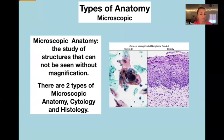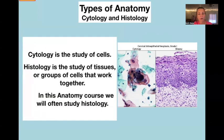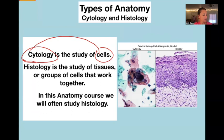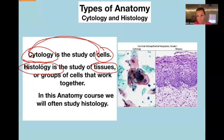Cytology is the study of cells — it has a C and a C, so it's easy to remember: cytology, cells. Histology is the study of tissues, and tissues are groups of cells that work together.